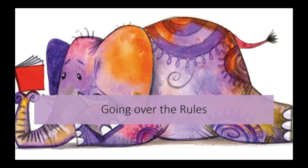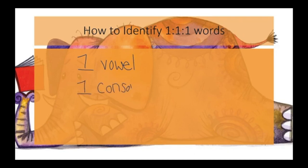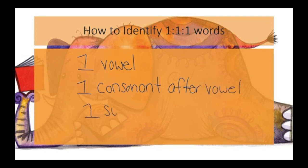The next part is going over some of the rules we've learned. First, let's talk about how we identify 1-1-1 words. We can identify 1-1-1 words by finding words that have one vowel, one consonant only after the vowel, and it has to be a one-syllable word.